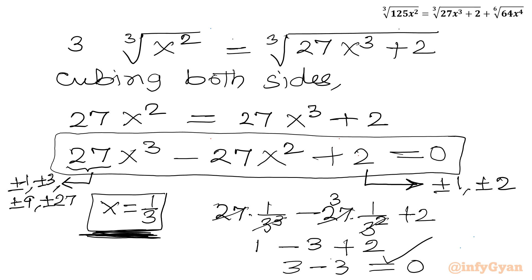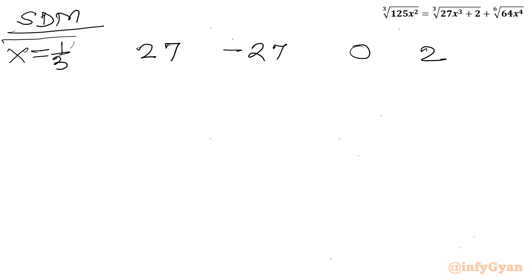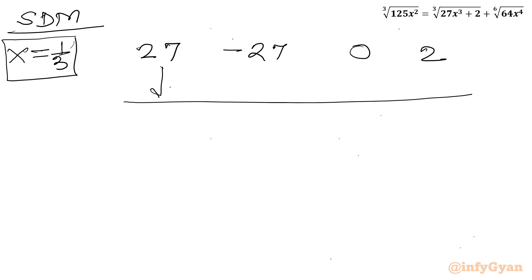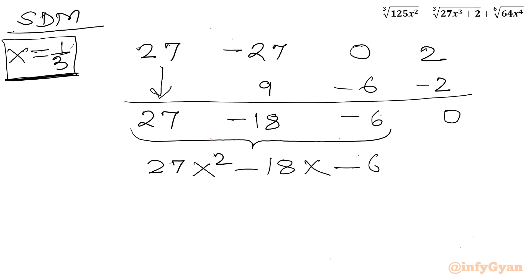Now let us use synthetic division with base solution x = 1/3 and coefficients of the cubic equation: 27, minus 27, 0, and 2. The leading coefficient is 27. Multiplying 1/3 by 27 gives 9; minus 27 plus 9 is minus 18; 1/3 times minus 18 is minus 6; 0 plus minus 6 is minus 6; 1/3 times minus 6 is minus 2; minus 2 plus 2 is 0. So we have coefficients 27, minus 18, minus 6 for the quadratic equation.